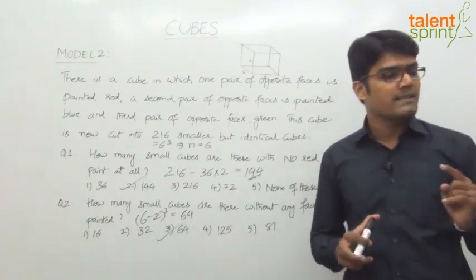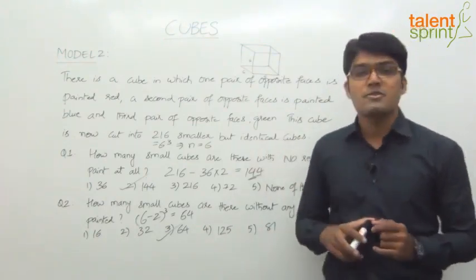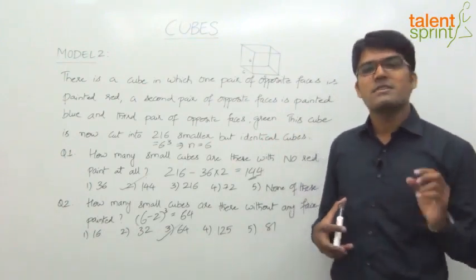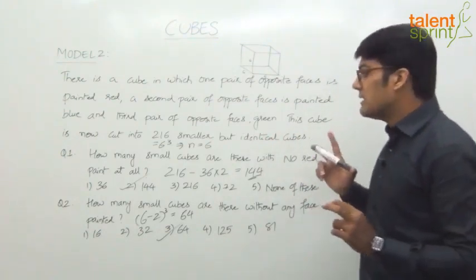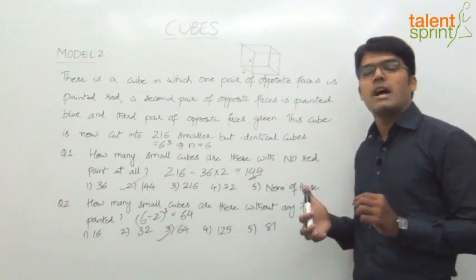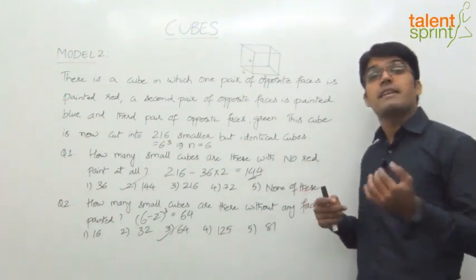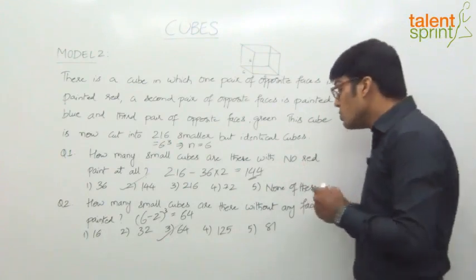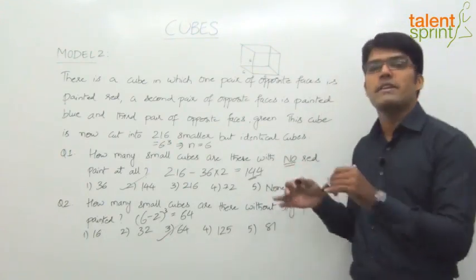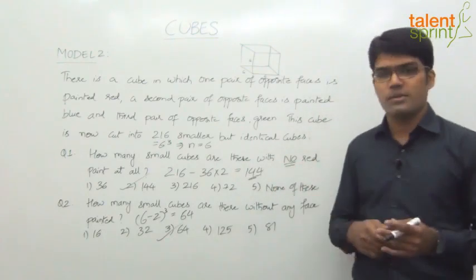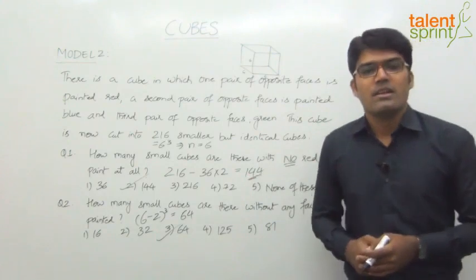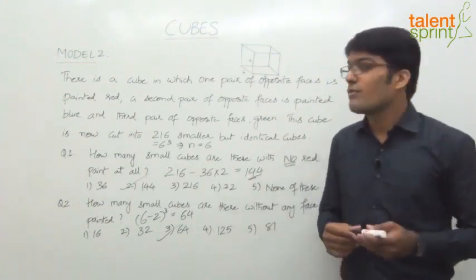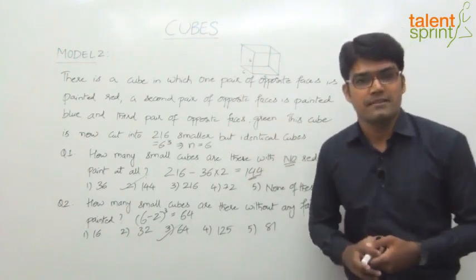Good that many of you got the right answers: 144 and 64. For those who got it wrong — some said the answer to question 1 should be 36. Ravi Kumar says the first one should be 72. The answer of 72 is for how many cubes have red paint. But the question asks how many cubes have no red paint. So total minus 72: 216 minus 72 is 144. That covers the first two questions. Let's now look at the remaining questions for the same data.